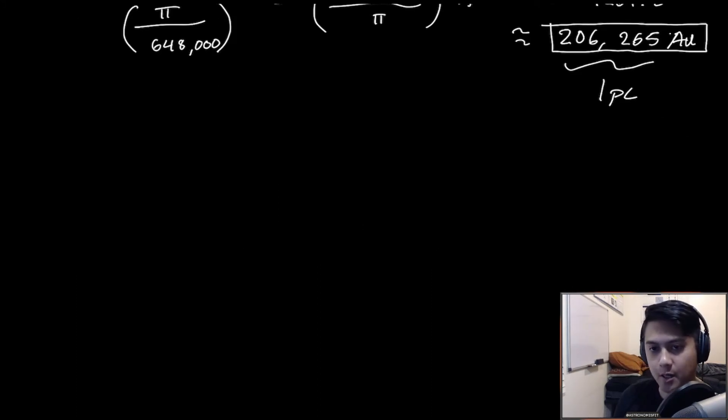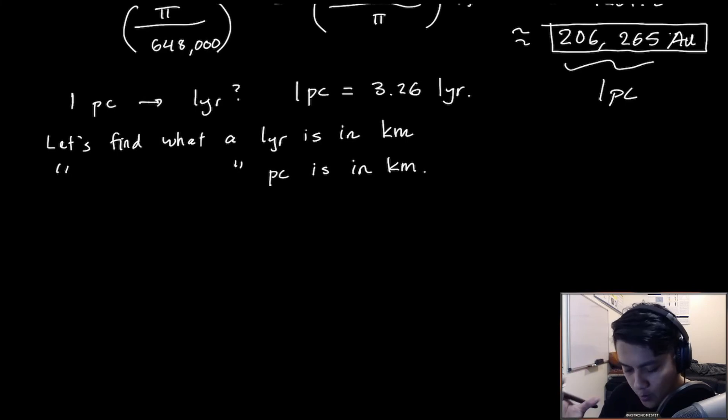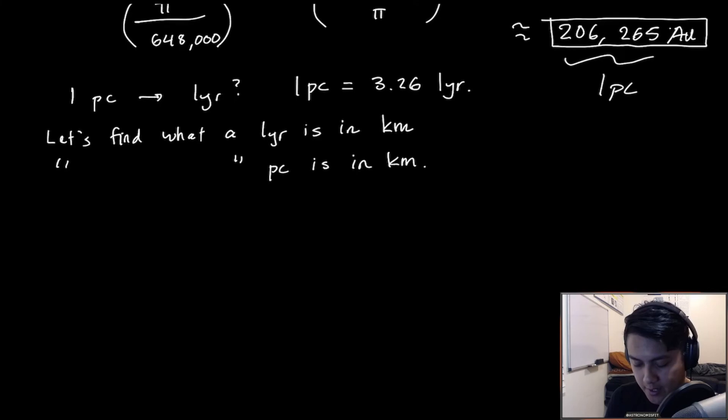At the beginning of this video, I told you that a parsec is also 3.26 light years. What I want to do now is show you that result based on what we found with the relationship between parsecs and astronomical units. We want to convert parsecs into light years and show that one parsec is equal to 3.26 light years.